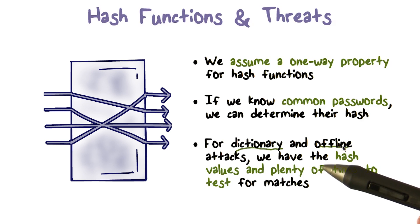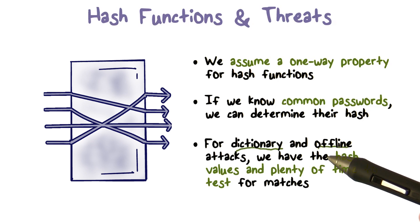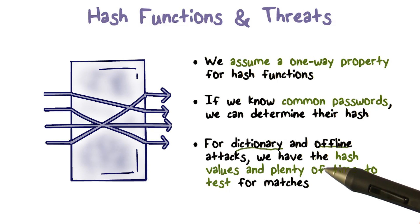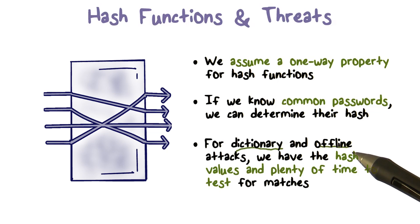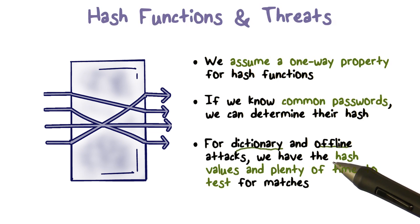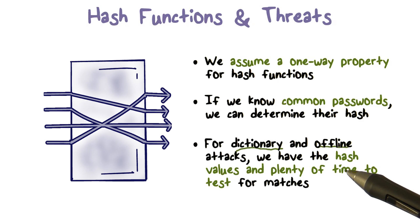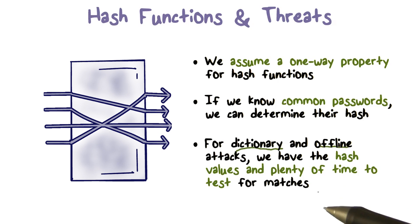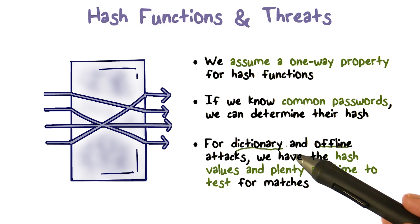An offline attack is one where we're not interacting with the system — we're not trying to log in each time we try a different password. If you do that, that's called an online attempt. We are interacting with the system, so when you do an online guessing attack, the system can stop you after a certain number of tries — it locks you out. To avoid that problem, we can offline, in our free time, take the hash values, take a dictionary, compute for each dictionary word the hash value, and search for that in the set of hash values we have. When we find a match, we know a password — all without interacting with the system.